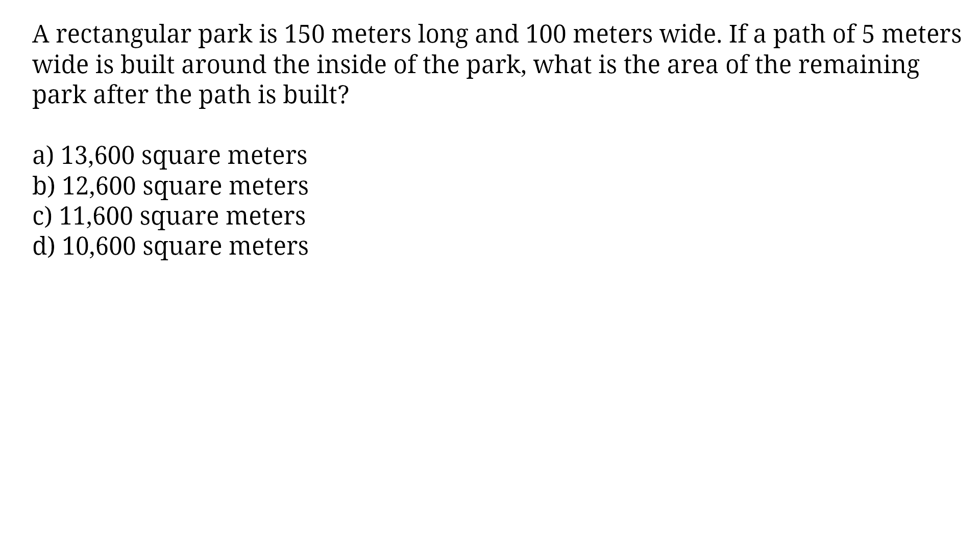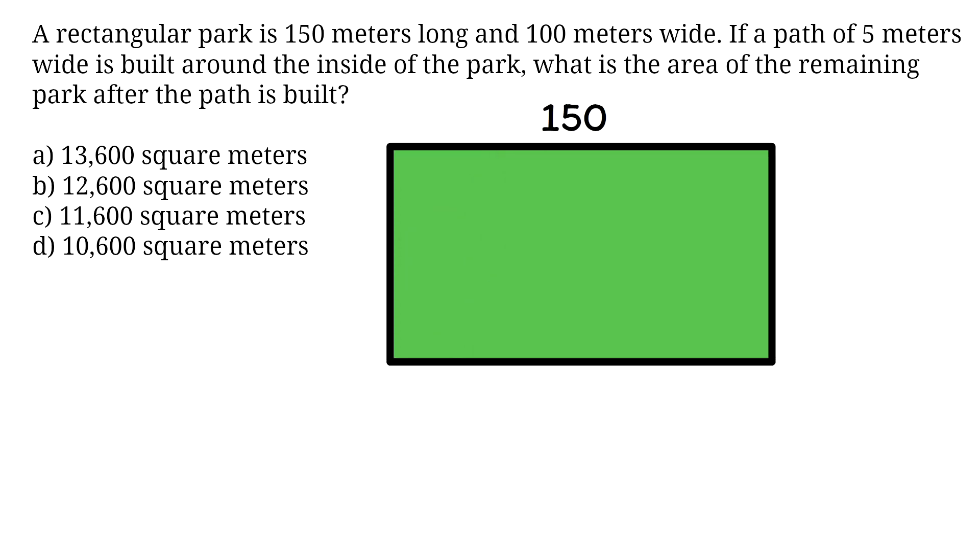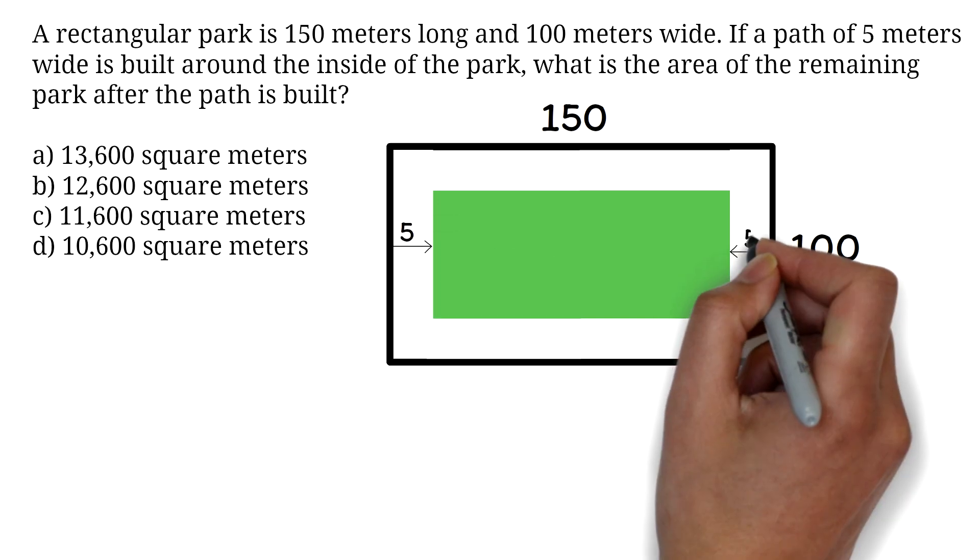A rectangular park is 150 meters long and 100 meters wide. If a path of 5 meters wide is built around the inside of the park, what is the area of the remaining park after the path is built? For geometry word problems, it is good practice to have a diagram so you can picture what the question is asking. We have looked at different versions of this question. Please check them out and compare them. We have a rectangular park. The length is 150 meters and the width is 100 meters. The 5 meter path is built inside. So, we are subtracting 5 from all the sides.